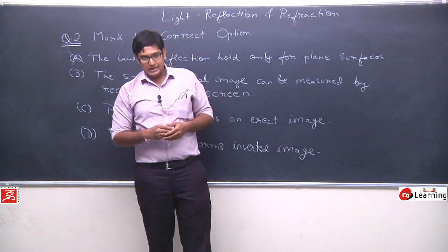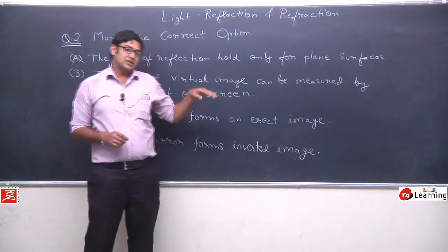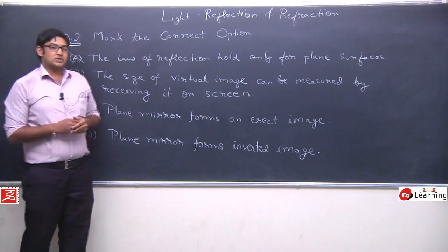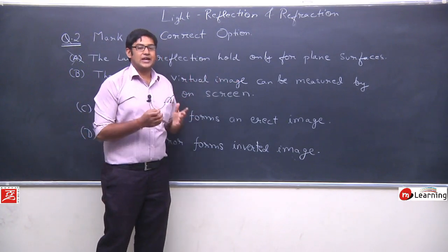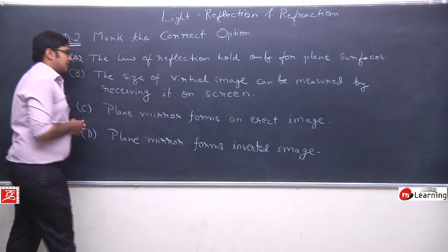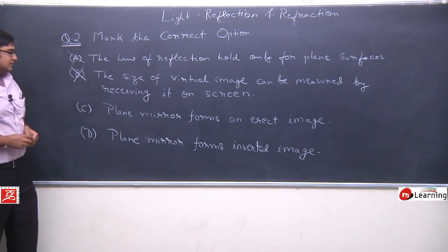We will discuss this more deeply when we discuss spherical mirrors. So, it means, virtual image cannot be taken on screen. If we cannot take it on screen, obviously we cannot measure its length or height or width. So, it means, second option is also wrong. We can cancel this.